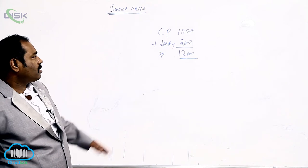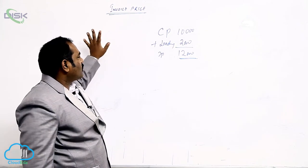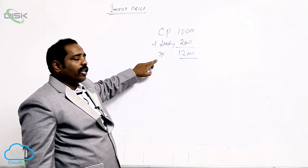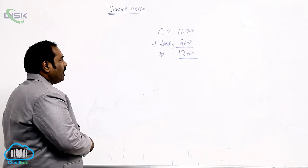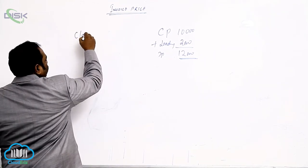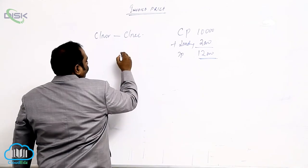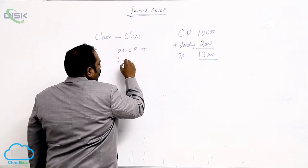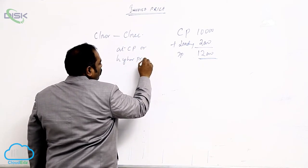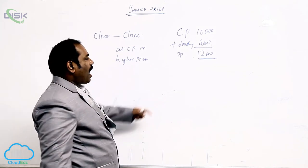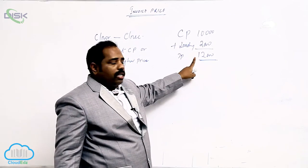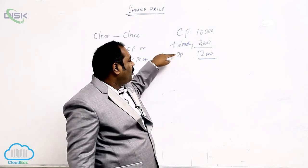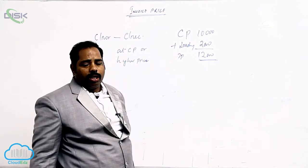So invoice price: the consigner may send the goods to the consignee at cost price or higher than the cost. When you add extra price to the cost, that is called invoice price. The difference between cost price and invoice price is called loading.